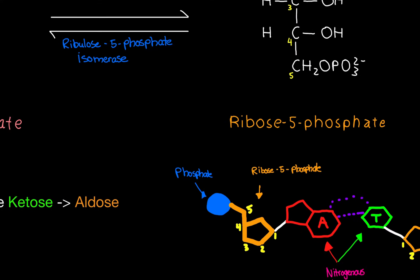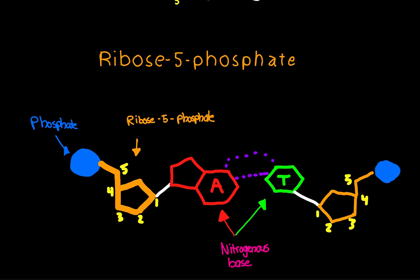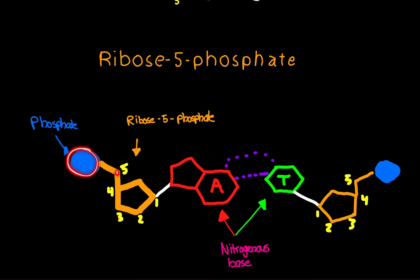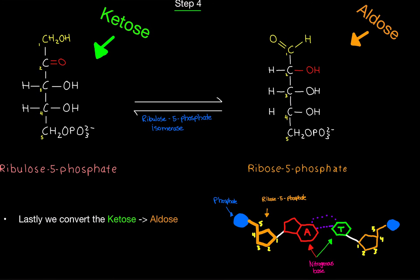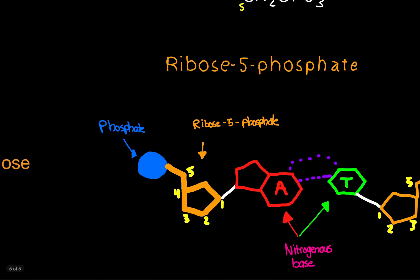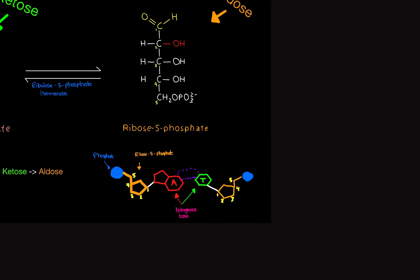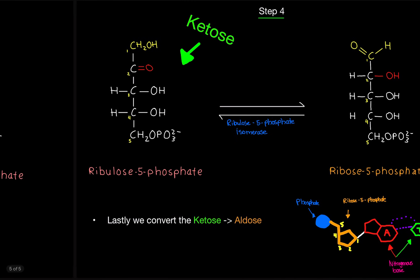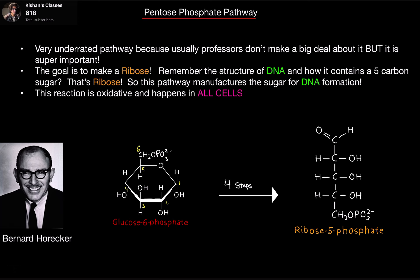Now we've finished the pathway and we have ribose-5-phosphate. Comparing it to the DNA molecule, ribose has five carbons, and on the fifth carbon we have a phosphate group — that's ribose-5-phosphate. Note that the oxygen atom in the structure is not a carbon, so don't be fooled when counting. That is the pentose phosphate pathway. Until next time, later.